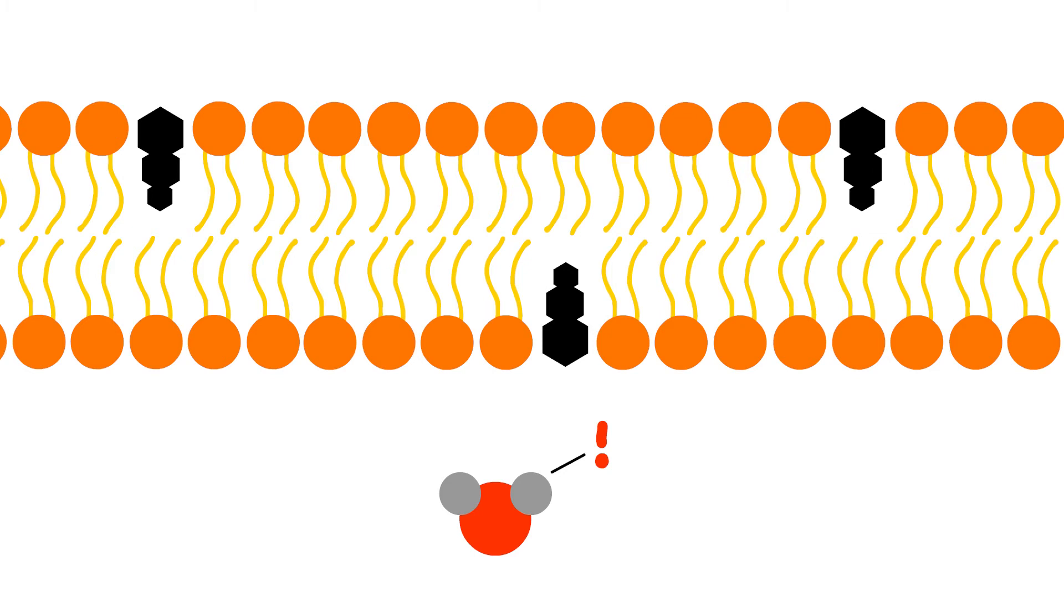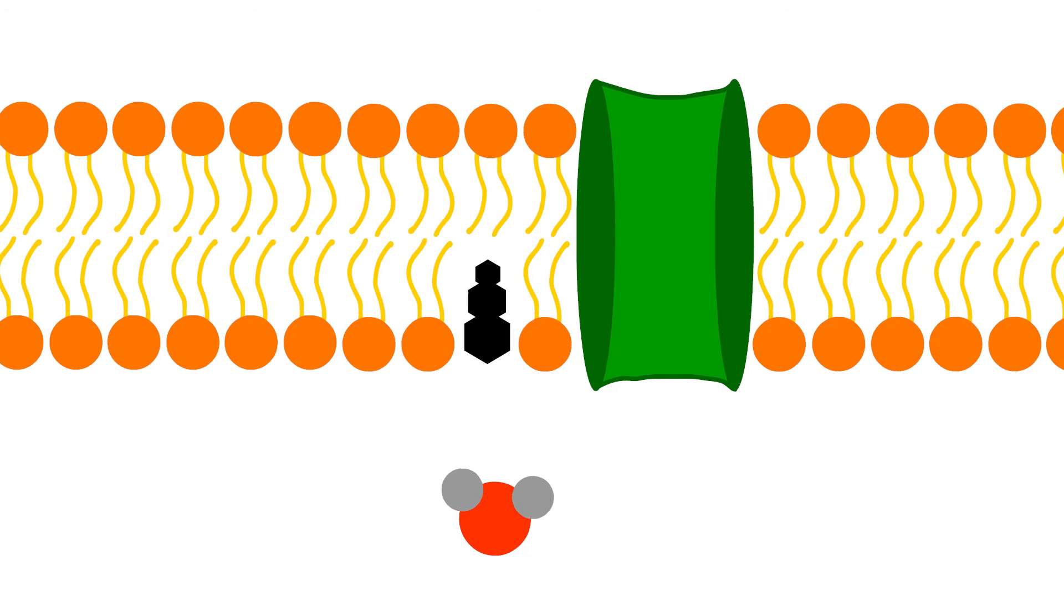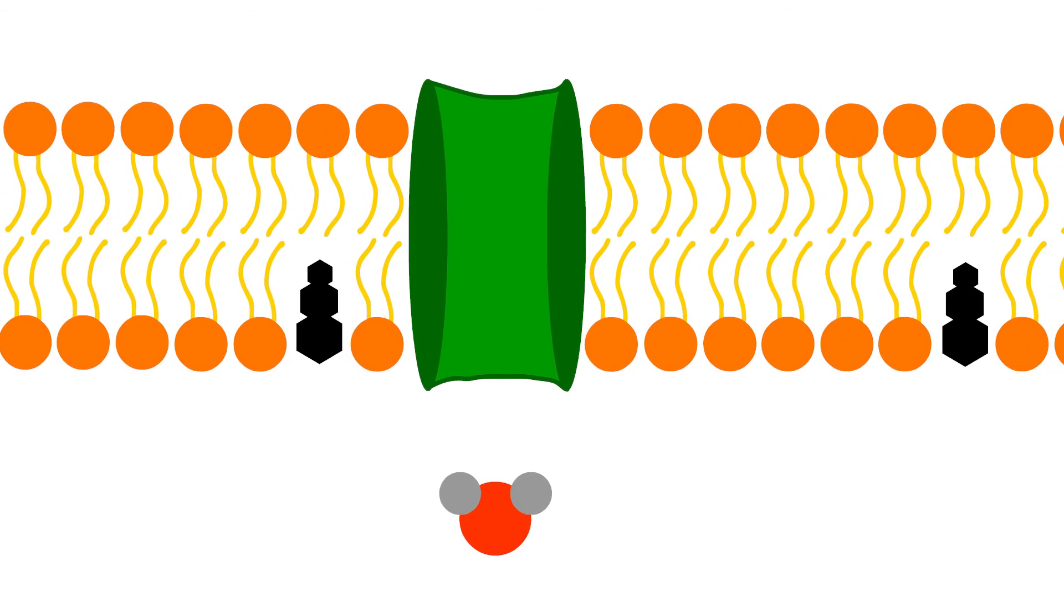But wait, one of the Hydro Twins spots something in the distance. They float over. It's extraordinary. They find what appears to be a protein forming a pathway right through the cell membrane. It is the perfect size and shape for them to pass through.